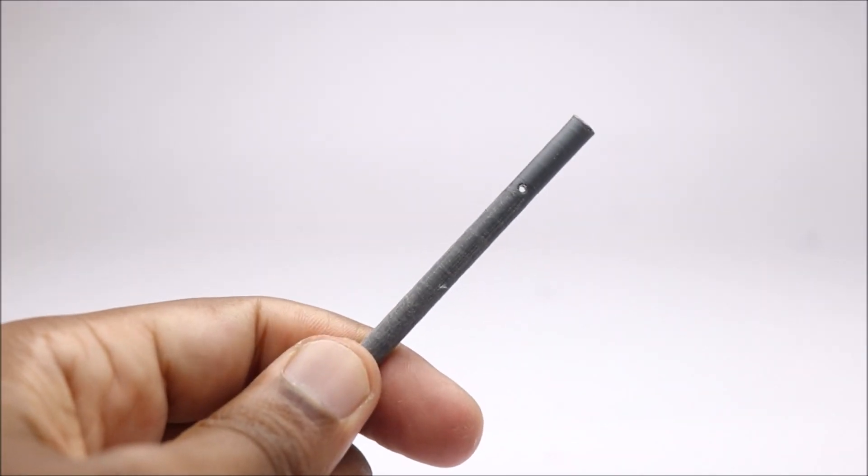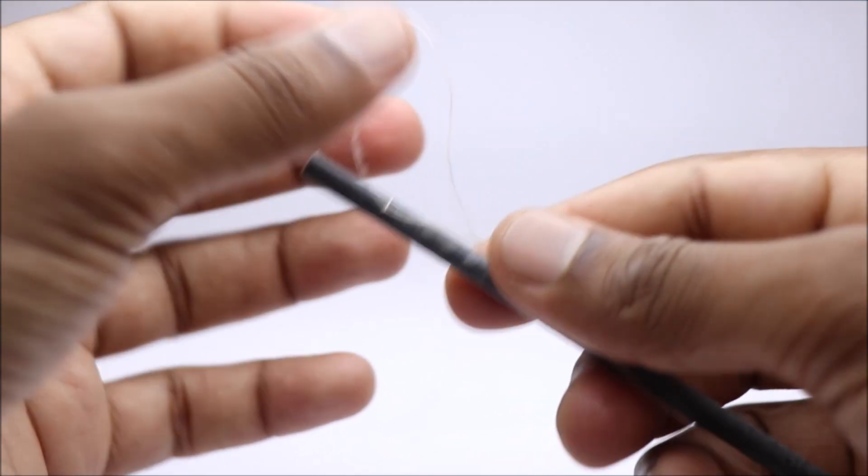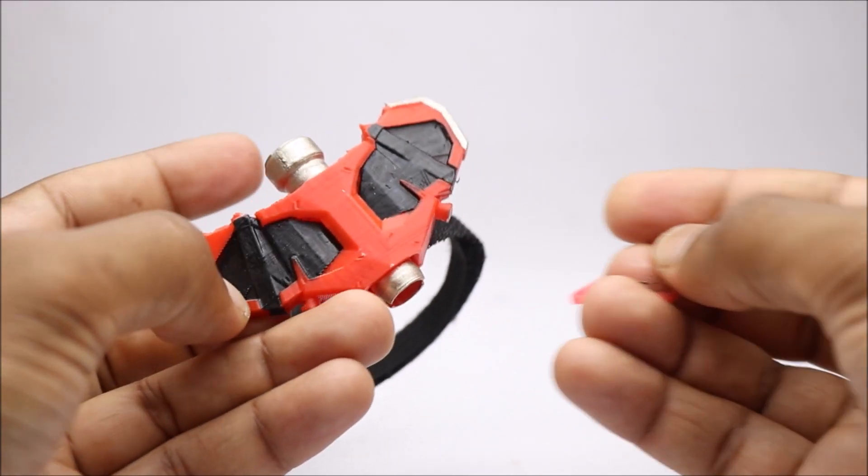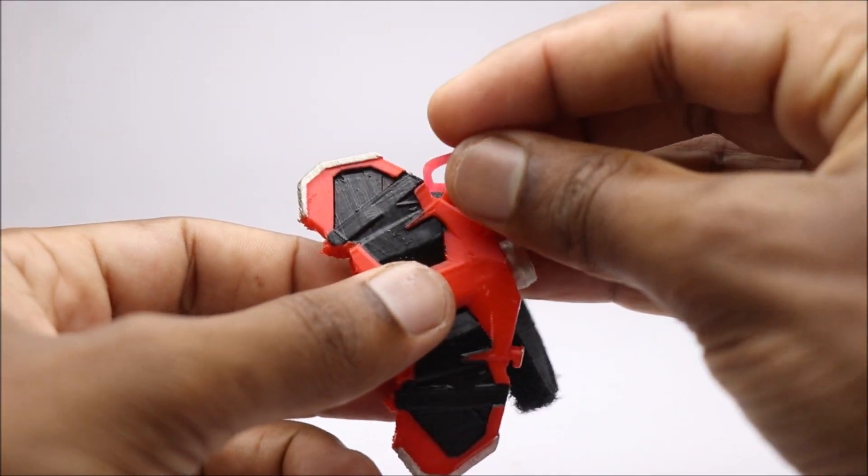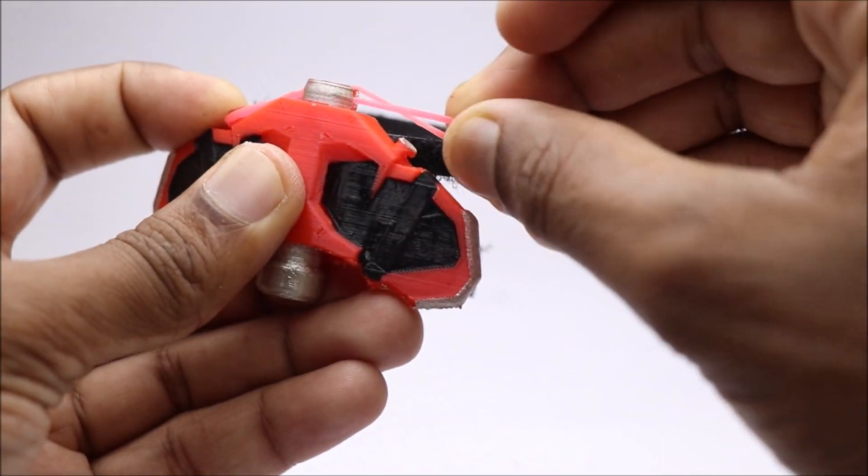For the slinger, add a piece of thread. And now finally add elastic band to the web shooter. Now you are ready to go.